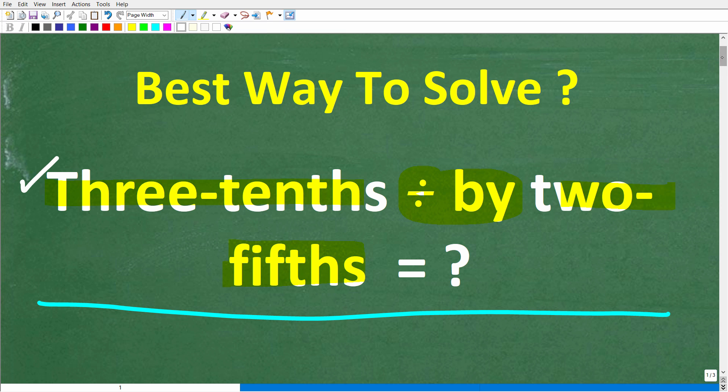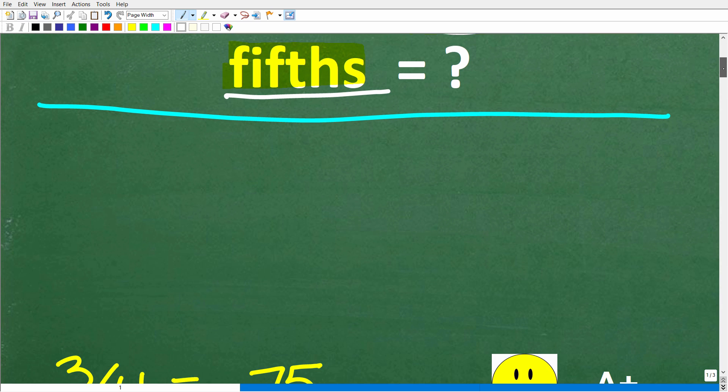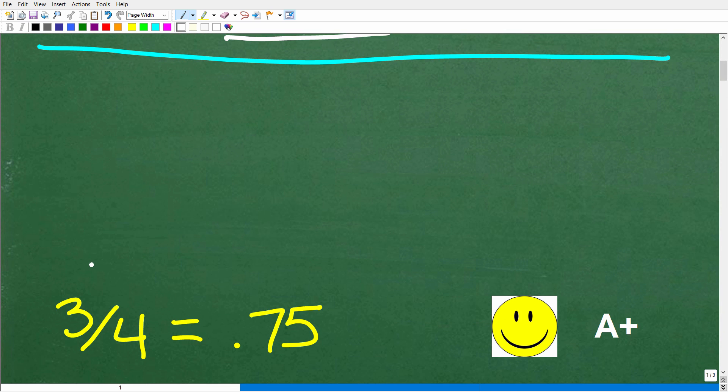Okay, so let's go ahead and take a look at the answer again. The question is 3 tenths divided by 2 fifths. Alright, so let's go ahead and take a look at that answer. The correct answer here is the following, either the fraction 3 fourths or the decimal 0.75.